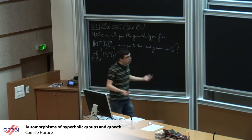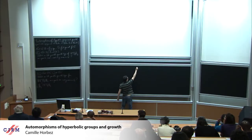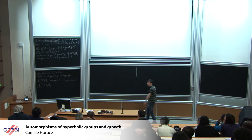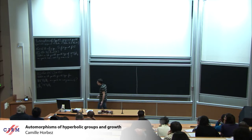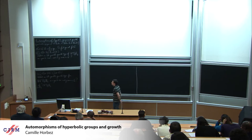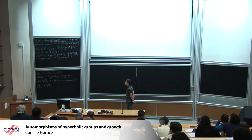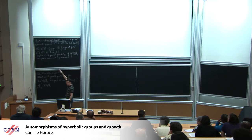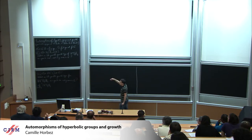These are very general questions you can ask in any finitely generated group G. I should say that unless in some very specific classes of groups, not much is known about these questions. For example, to my knowledge, it's not known whether there is a single example of a group G and an automorphism for which you can find elements that grew slower than any exponential but faster than any polynomial.